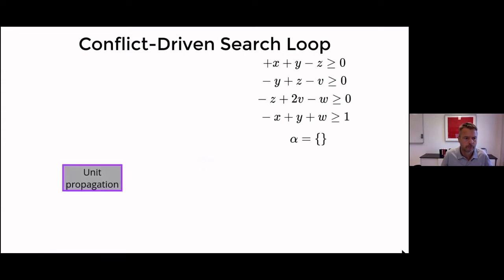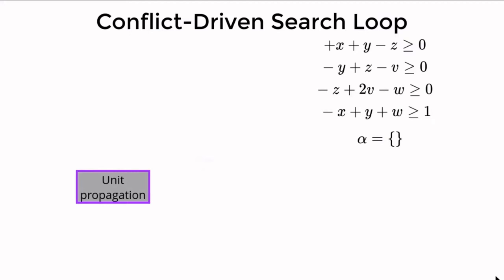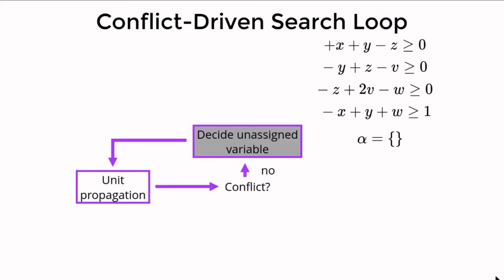The first step is unit propagation, which extends the partial assignment with variable fixings implied by the constraints. In our example alpha is empty and no implied fixings exist yet. A conflict occurs if some constraint is falsified by the partial assignment. Currently this is not the case, so we proceed. We extend the partial assignment with a heuristic unassigned variable fixing called a decision. If no unassigned variable exists we have found a solution.